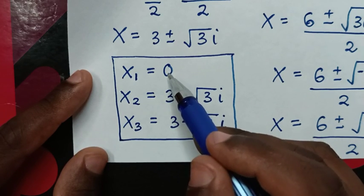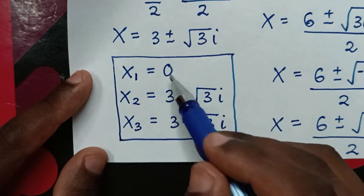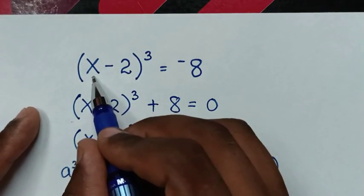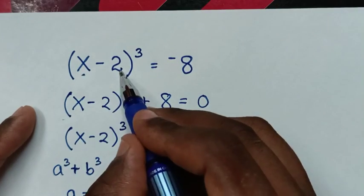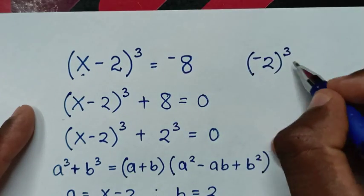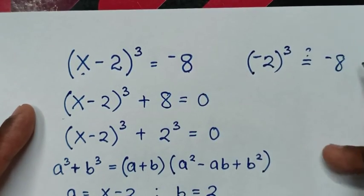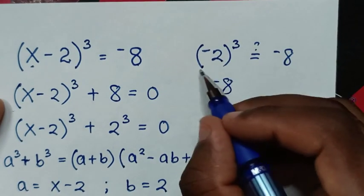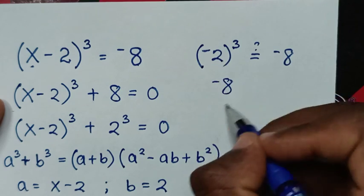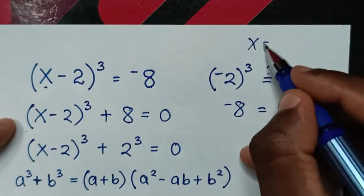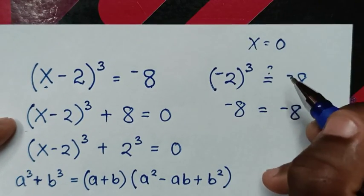Now to check: x = 0 is the real value, and the other two are complex values. Let's verify for x = 0 by substituting into the original equation: (0 - 2)³ = (-2)³. Since (-2) × (-2) = 4, and 4 × (-2) = -8, we get -8 = -8, which is true. So x = 0 is confirmed, and the complex solutions also hold.